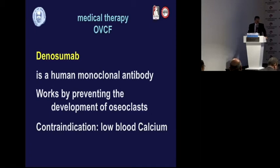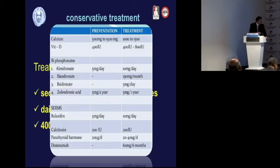Denosumab is a newer option — a human monoclonal antibody that works by preventing the development of osteoclasts. There is a contraindication when the patient has low blood calcium. To summarize, this is the landscape of conservative treatment.